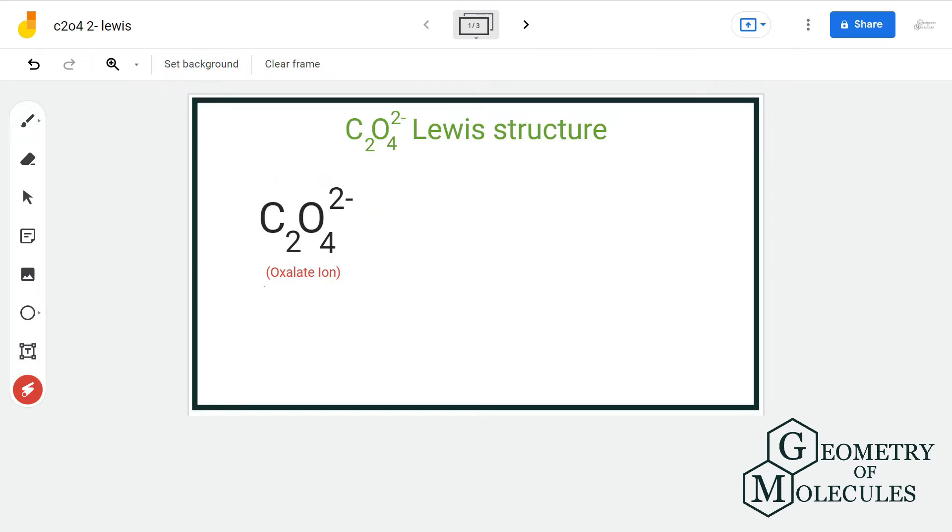It's a chemical formula of oxalate ion and to determine its Lewis structure, we will first look at the total number of valence electrons.